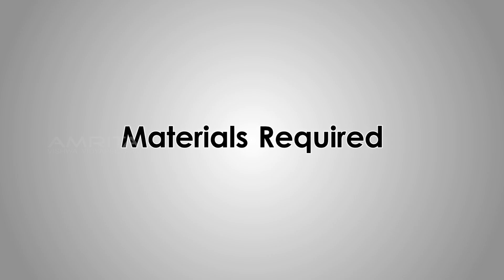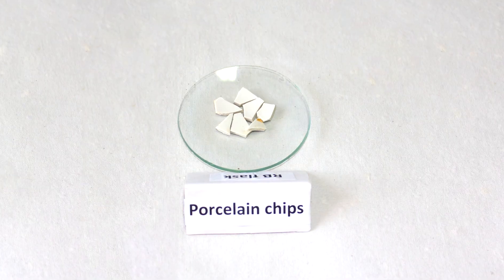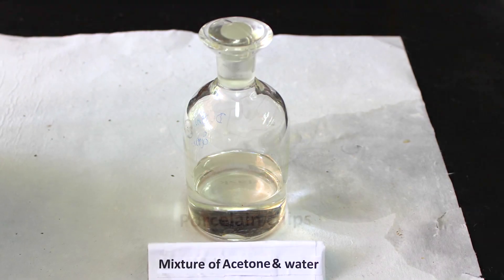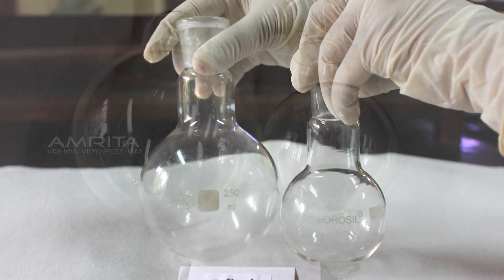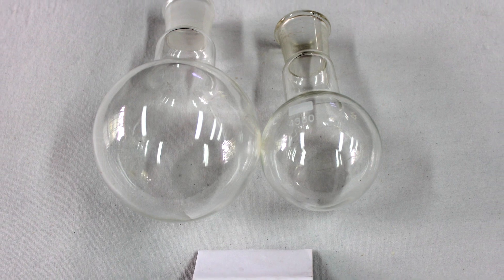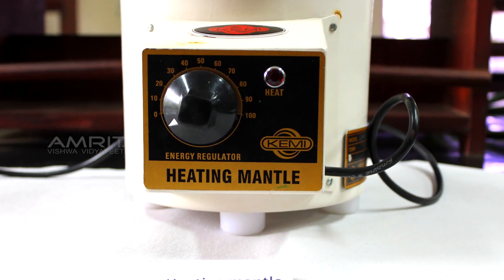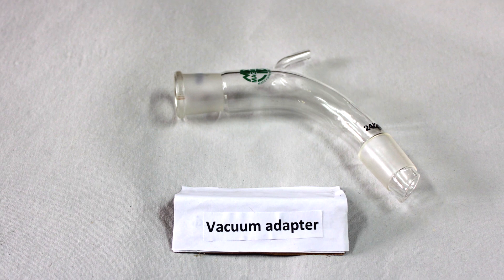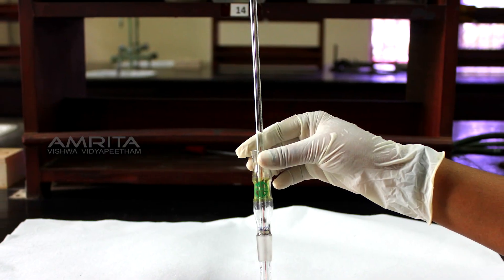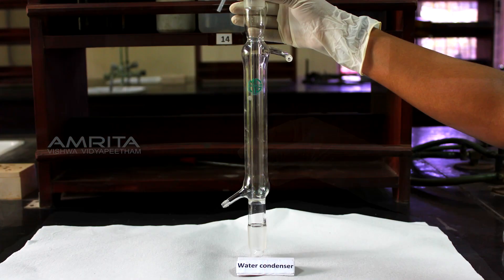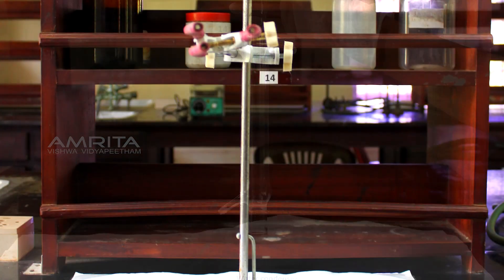Materials Required: Porcelain chips, mixture of acetone and water, 250ml and 100ml RB flasks, heating mantle, vacuum adapter, distilling head, thermometer adapter, water condenser, and stand with clamp.